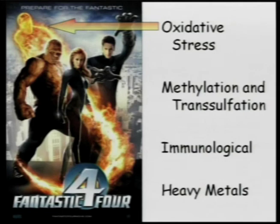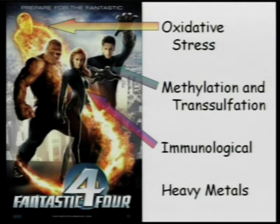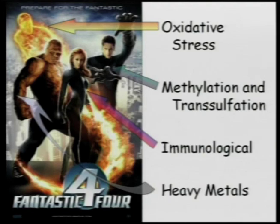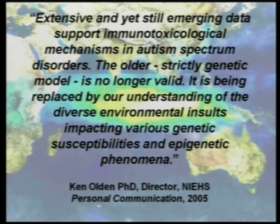So oxidative stress — we'll define these things later, but write these down. You have to leave my lecture today with an understanding of these and a game plan to define, treat, and intervene if they're present in your child. Methylation and transsulfation — we chose that character from the Fantastic Four movie because he can change shape, and this is how the body rearranges its chemistry. Immunology — it made sense to pick the female out of the group since mom provides all passive immunity to the child while in the womb and for about six months after birth. And obviously he qualifies as the heavy metal guy.